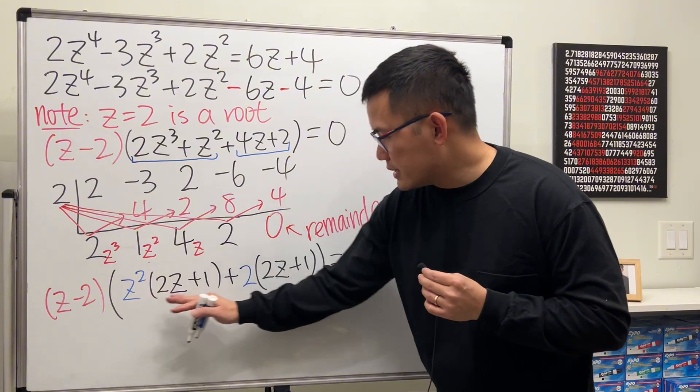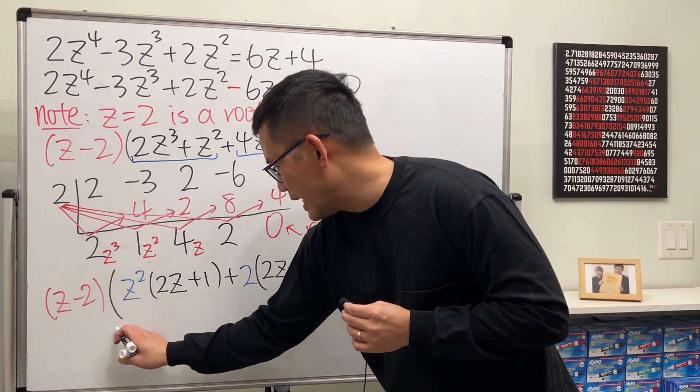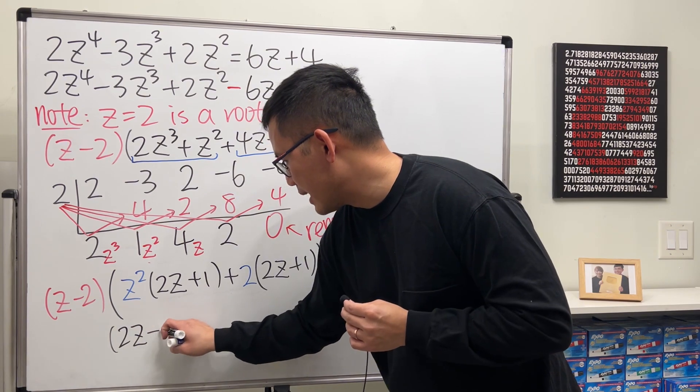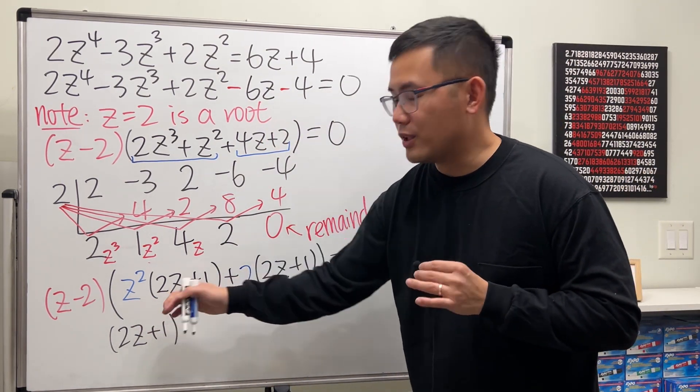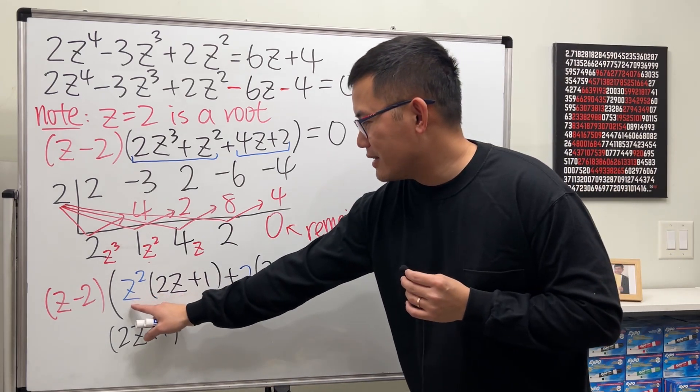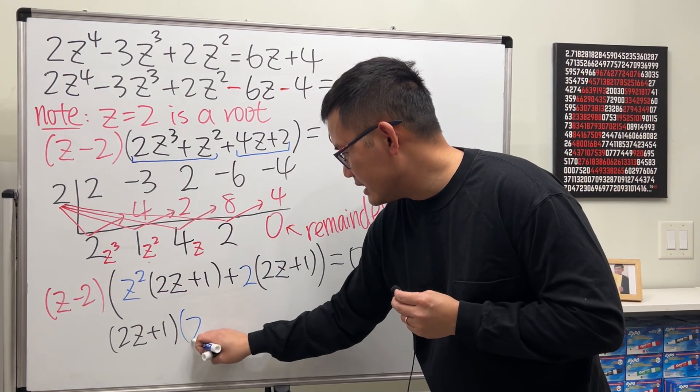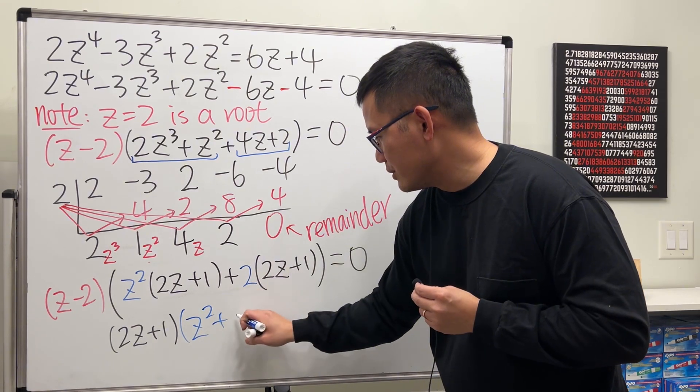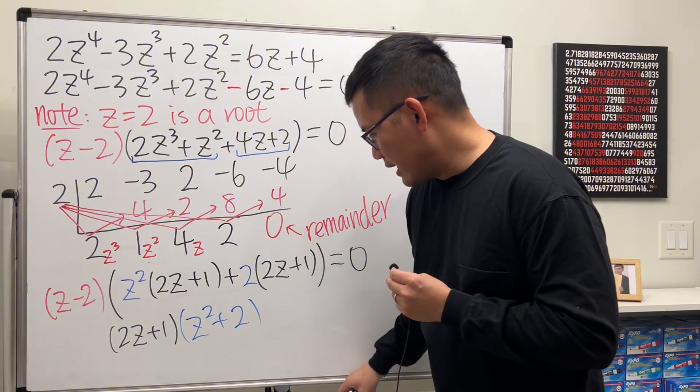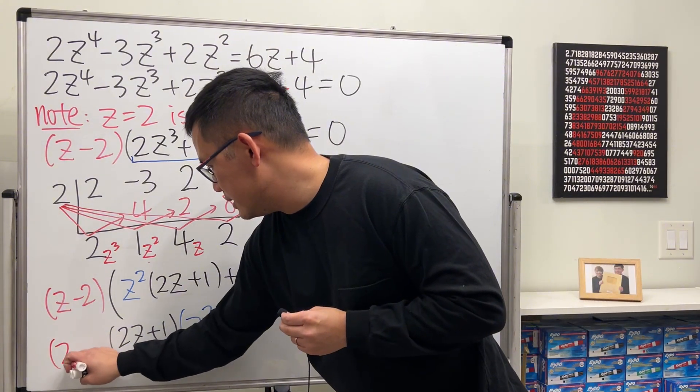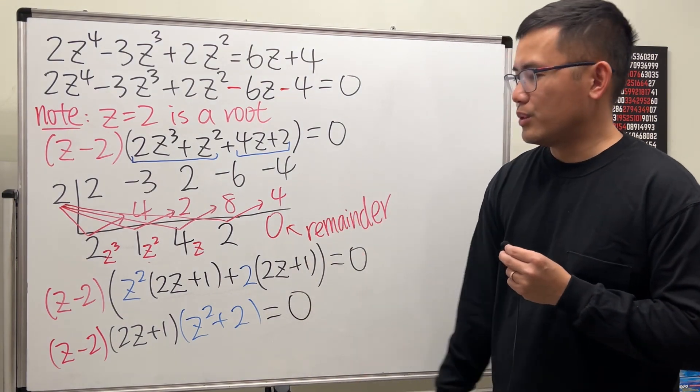So if you just focus on the inside now, this and that are the same. So we can factor that out. So we have 2z + 1. And then we have the remainder, well the leftover. This and that, we can say that's z² + 2. z² + 2. And of course don't forget our z - 2 all the way in the beginning. And that will give us 0.